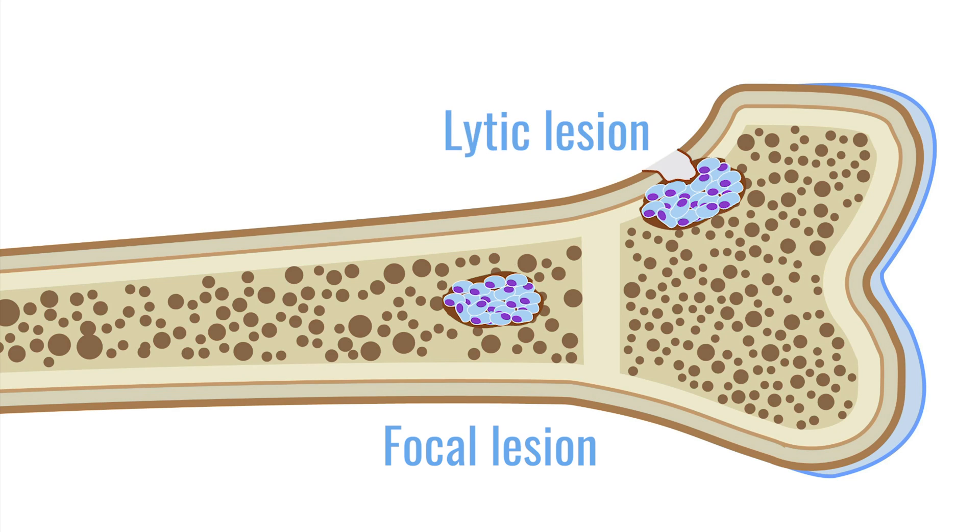Can lytic and focal lesions happen in the same location? Sometimes focal bone lesions happen at the same location as lytic bone lesions, so a collection of plasma cells will directly stimulate destruction of the bone in that spot, but often they're at different places completely. This is most easily seen on PET-CT scans, where one can see focal bone lesions on the PET part and lytic bone lesions on the CT part. Sometimes you'll see lytic lesions without any uptake of the radioactive sugar used in the PET scan, and at the same time see areas with increased uptake of the radioactive sugar without any evidence of bony destruction.